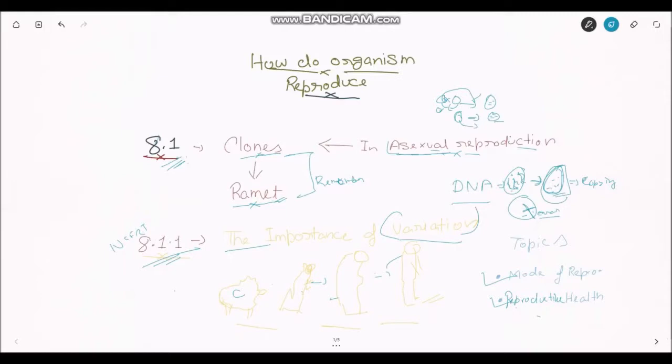Because of those minute errors, variation happens. And variation is important for making a new, much more efficient, much better form of organism.